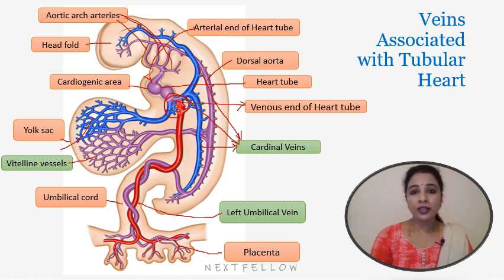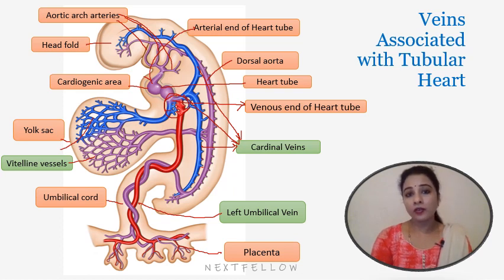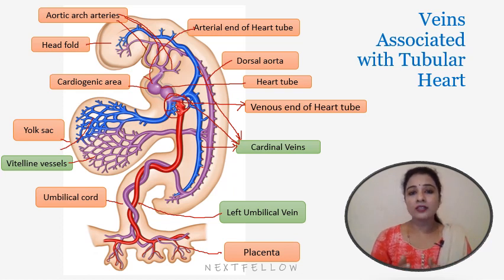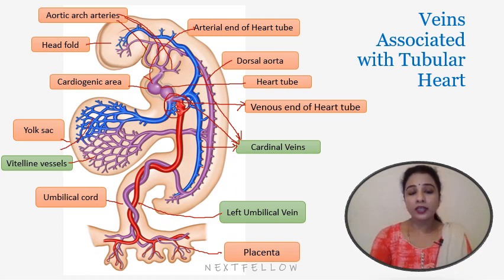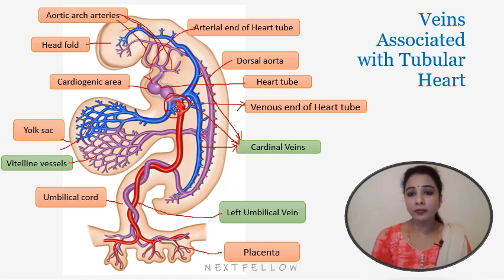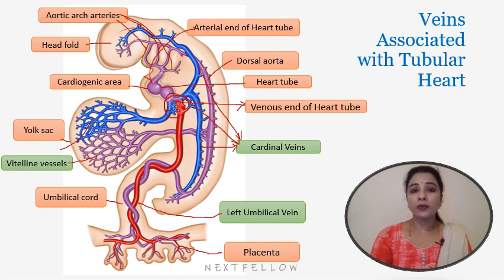Vitelline veins mainly drain the yolk sac and return poorly oxygenated blood from it. There are right and left vitelline veins. The right vitelline vein forms the hepatic veins and sinusoids, ductus venosus — which later forms the ligamentum venosum in adults — and the hepatic portal, superior mesenteric, inferior mesenteric, and splenic veins, as well as part of the inferior vena cava. All of these are derived from vitelline veins.